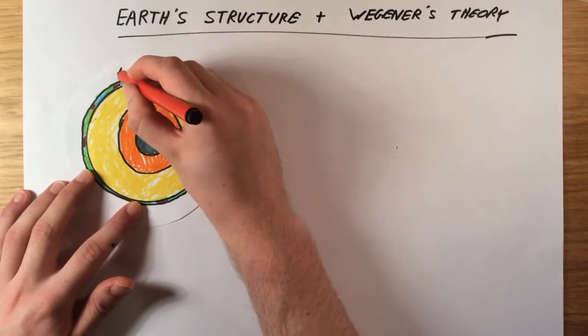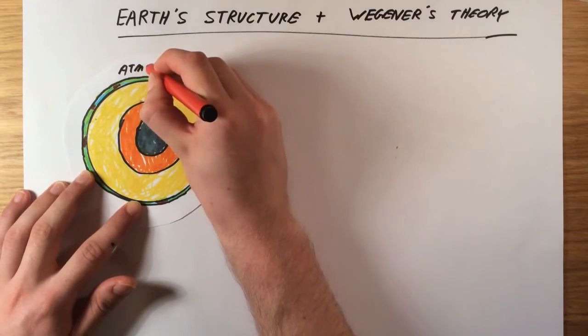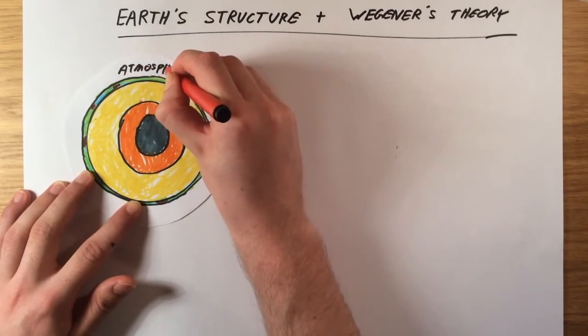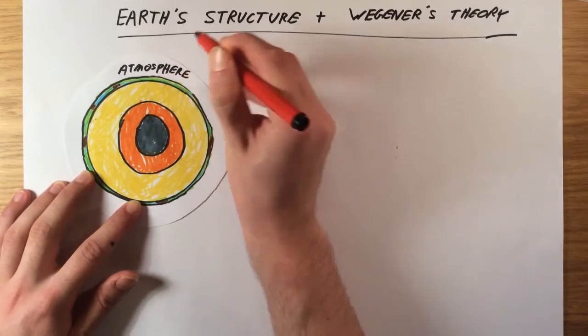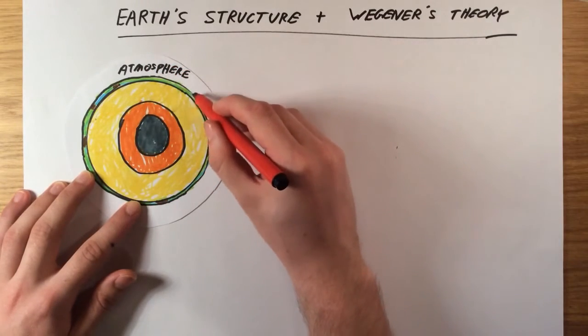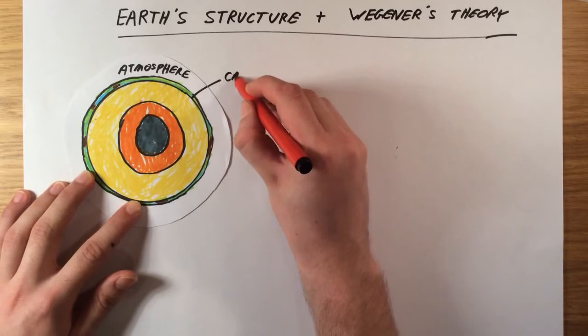Around the Earth there is a mixture of gases which is called the atmosphere, which we're going to talk about more in the next video. The part where we live is actually incredibly thin compared with the rest of the Earth, and that is known as the crust.